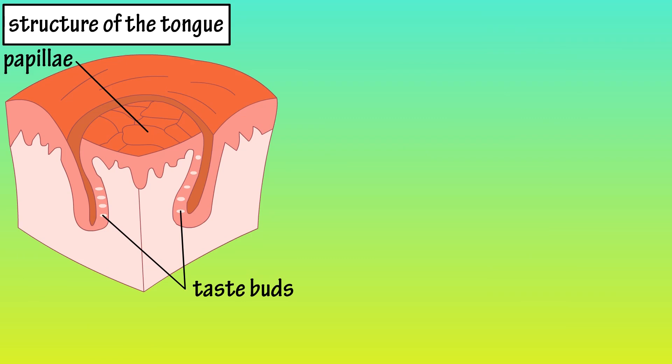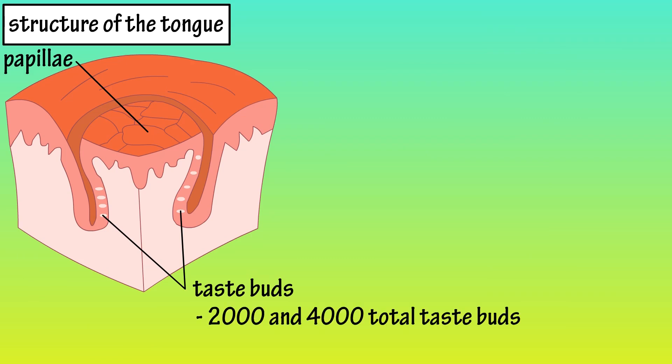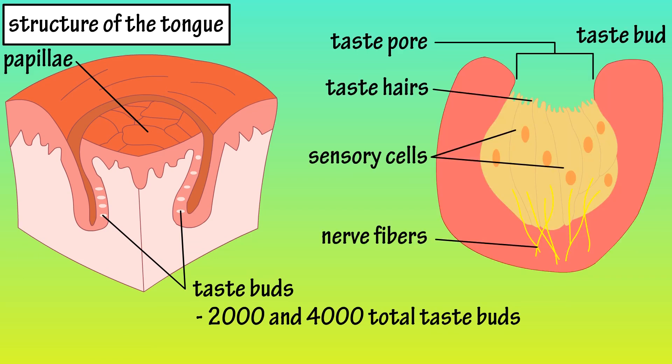Taste buds are located in the walls and grooves of papillae, and most adults have between 2,000 and 4,000 buds in total. Taste buds consist mainly of a taste pore, sensory cells, and taste hairs.